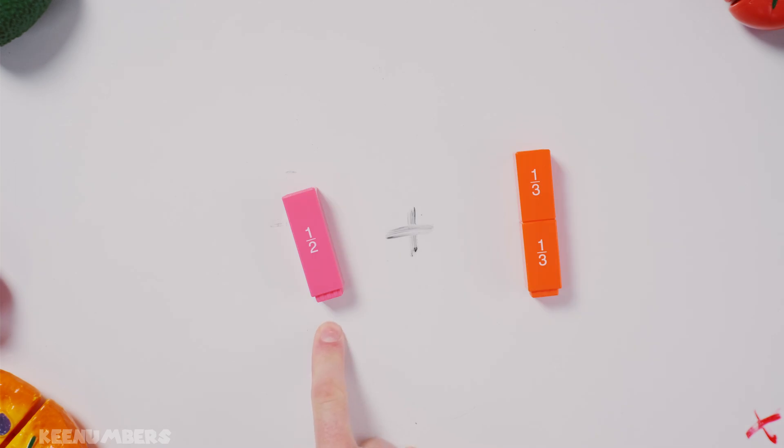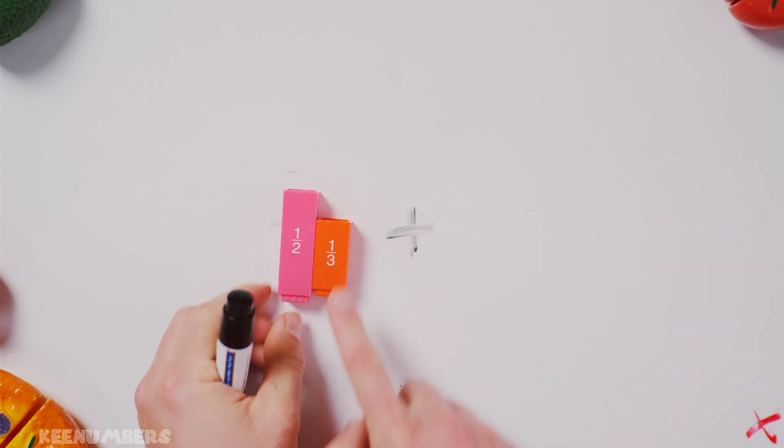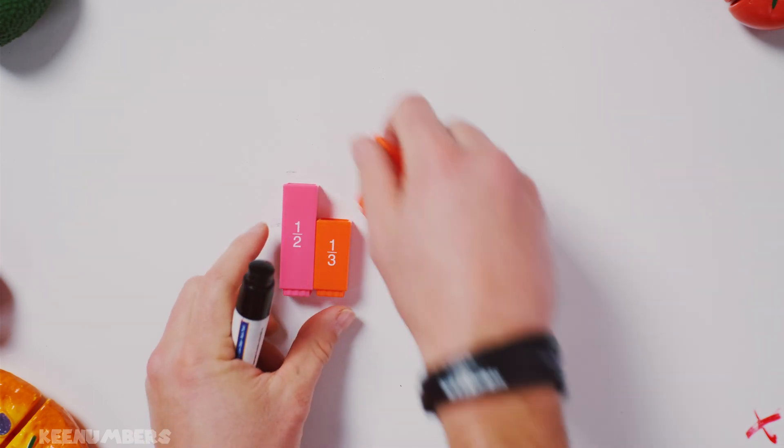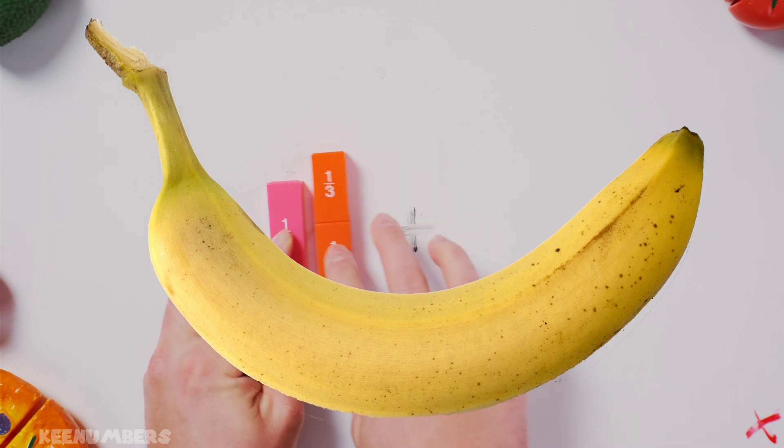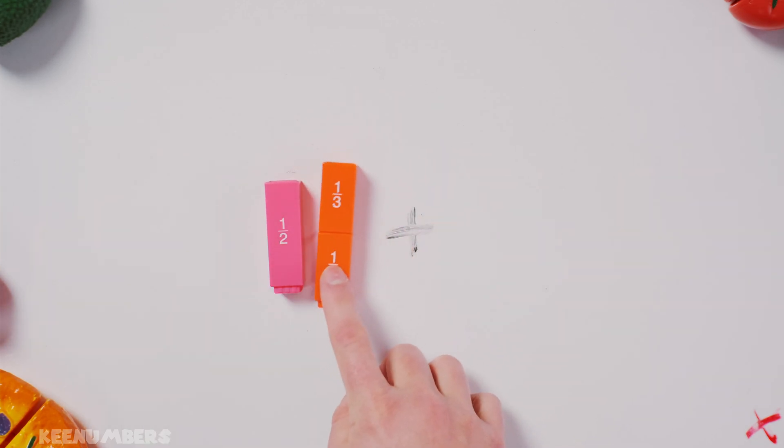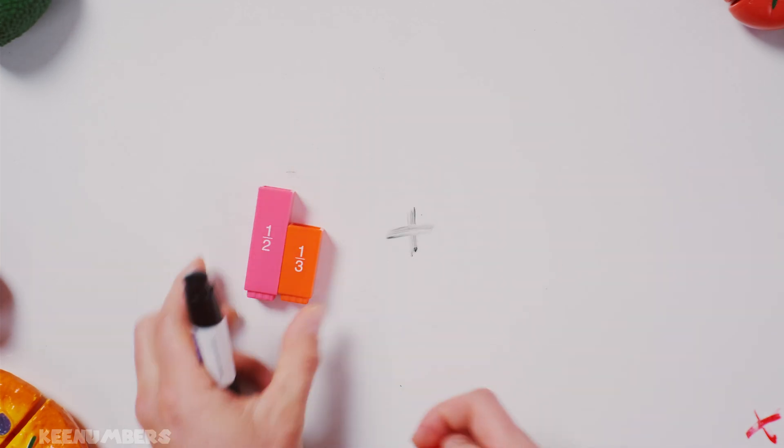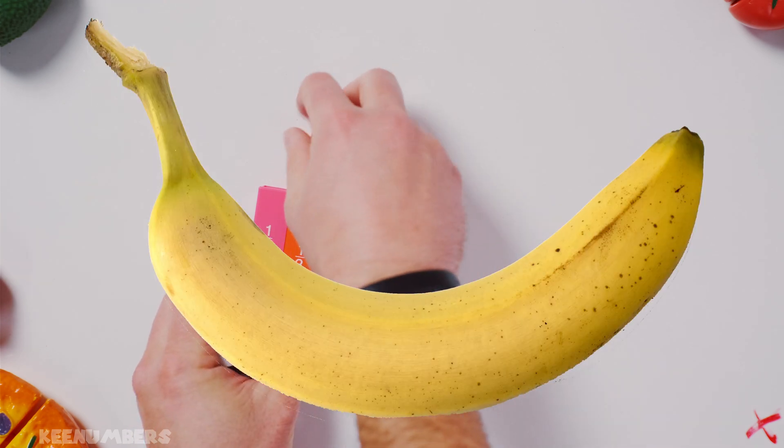Here's our problem here. We have 1 half and 2 thirds. They're not the same fraction. Look at that. 1 half is not the same thing as a third. So when you have a half and 2 thirds, you can't add these fractions together. They're not the same fraction.